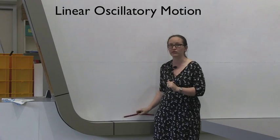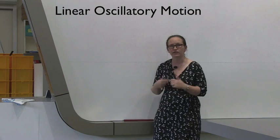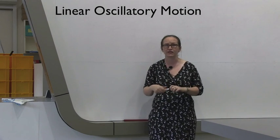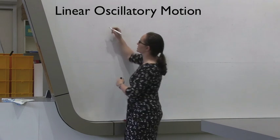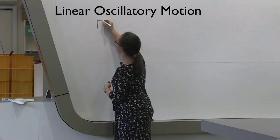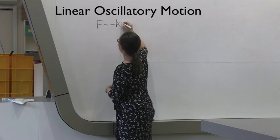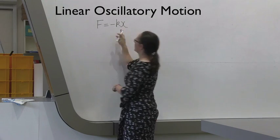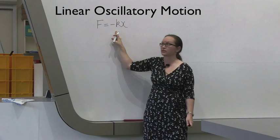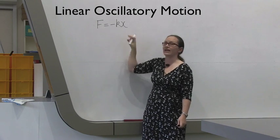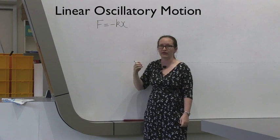Firstly, you're going to be using a direct method. The direct method makes use of Hooke's law, which tells us that the restoring force F is equal to minus kx, where k is the spring constant of the spring, and x is the displacement from equilibrium.